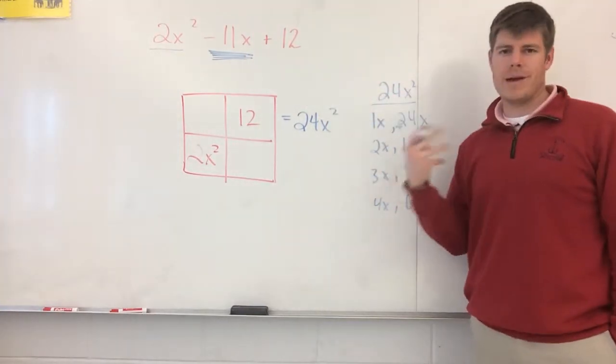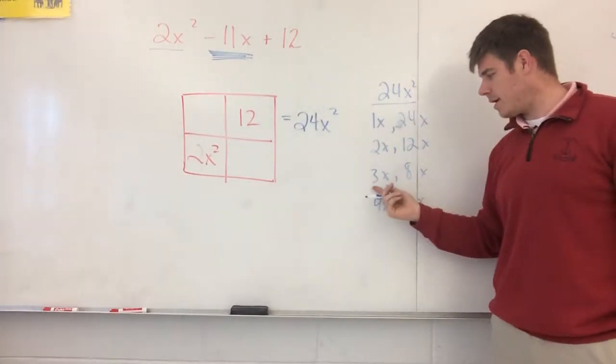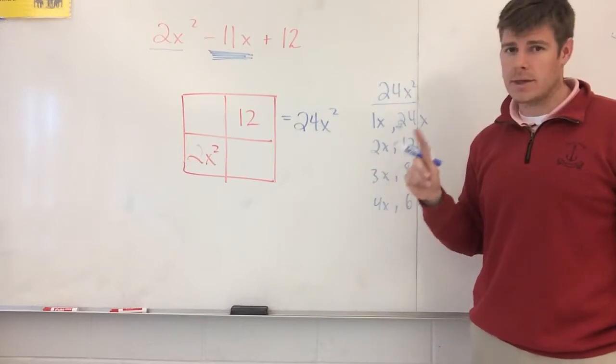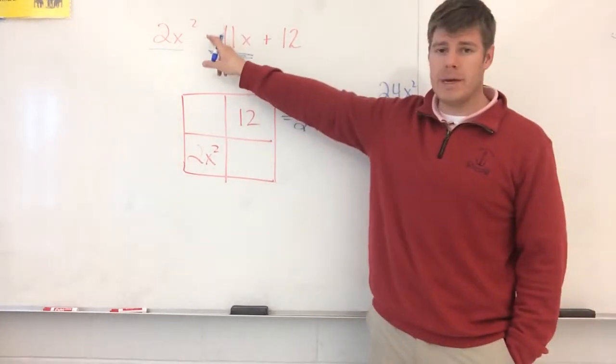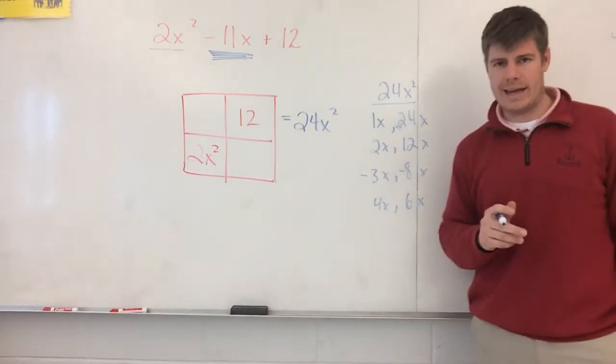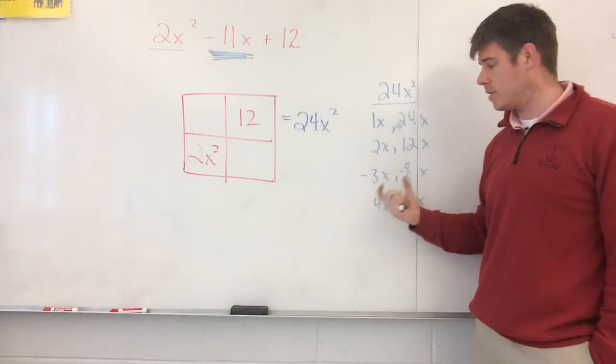But 2 and 12, if I make them both positive or both negative, there's still no way I'm getting negative 11. But if I come down here and I make this 3 and 8 and make them positive, I get positive 11. But here's the thing you have to be careful of. It's got to be a negative. So if I take negative 3 and multiply it by negative 8. So let's say I do that because that's what makes me negative 11.